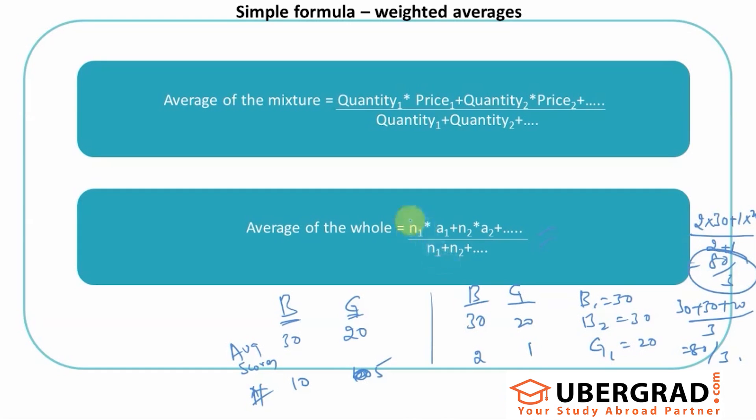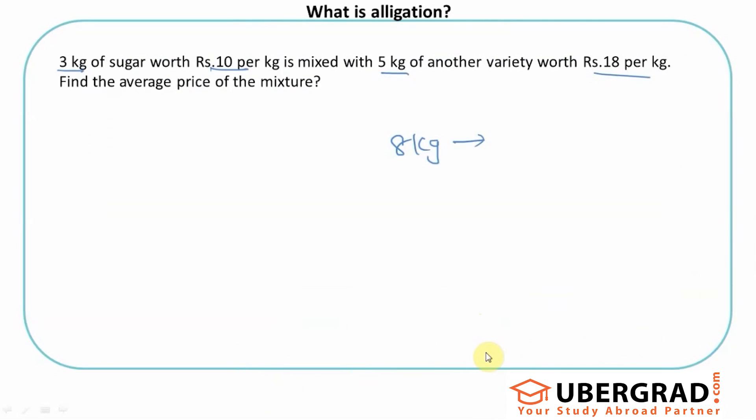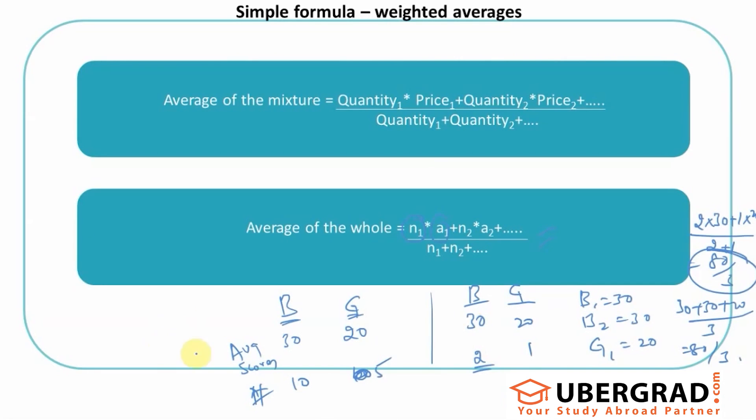Now this formula is number of people of that group times whatever the attribute we are talking about. Here I am talking about the scores. If you look at the earlier example, we're talking about the price. It varies depending on the question.